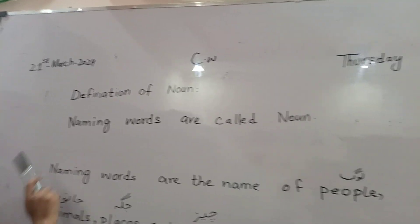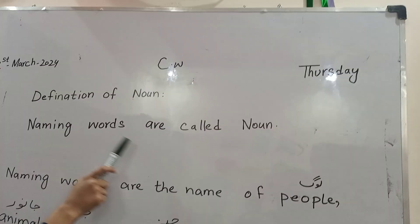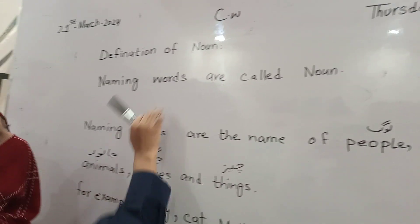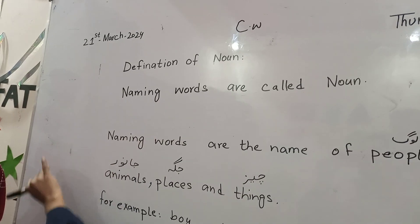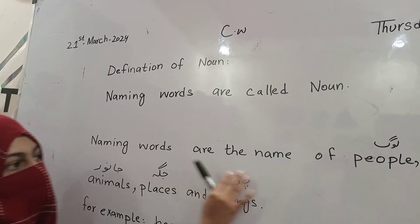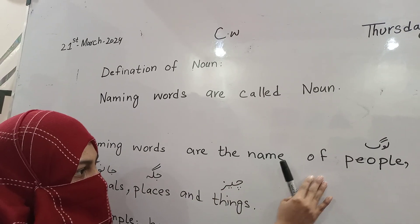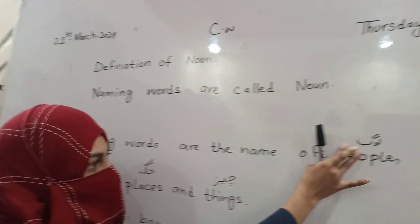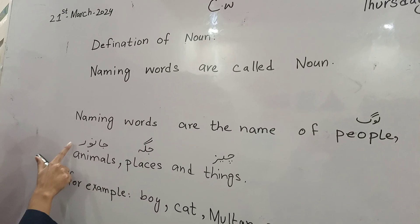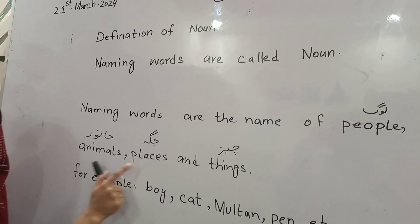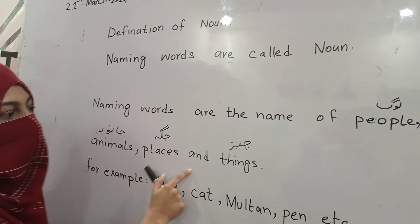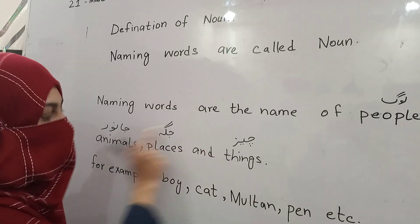Definition of noun: naming words are called noun. Naming words are the name of people, animals, places, and things.